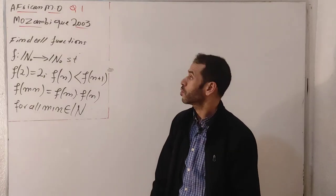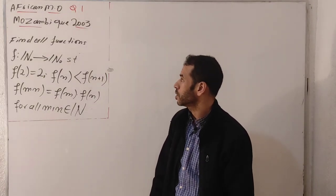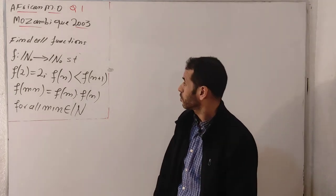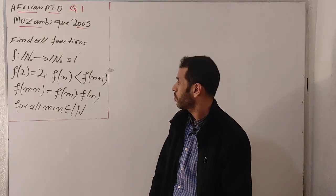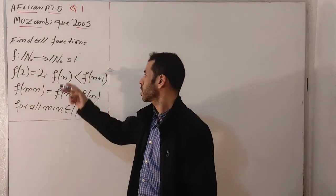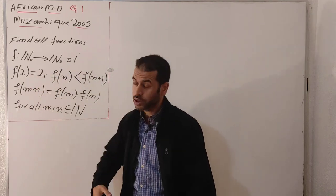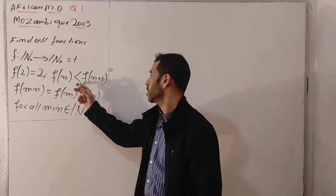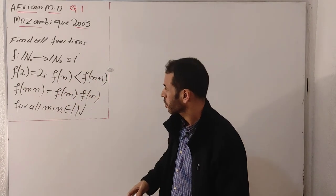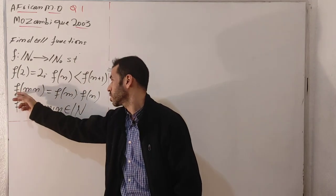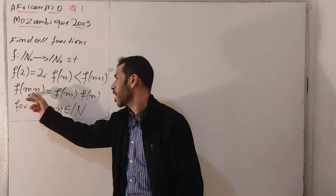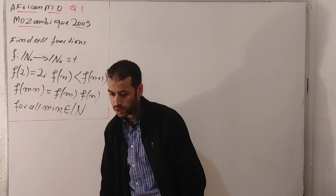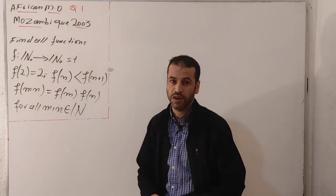In this video I would like to introduce a very nice problem from the African Mathematics Olympiad, Mozambique edition 2003, question number one. Find all functions f: ℕ → ℕ such that f(2) = 2, f(n) < f(n+1) for all n, and f(mn) = f(m)·f(n) for all m, n in the natural numbers.